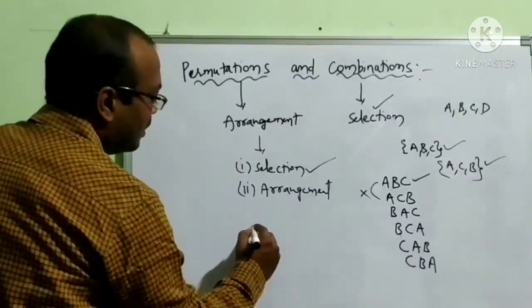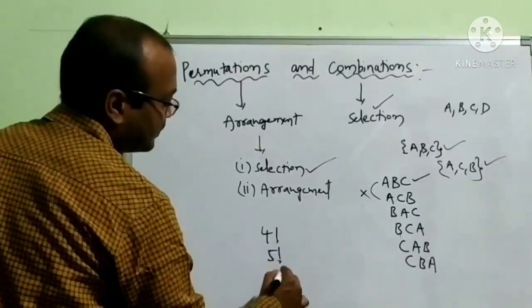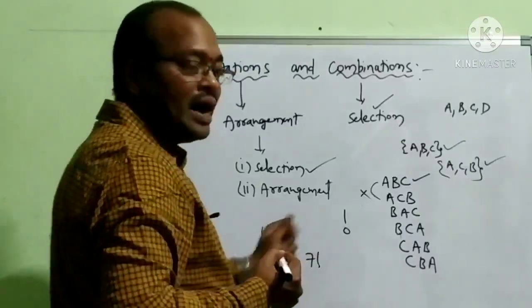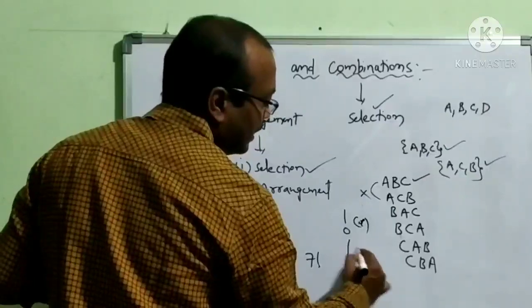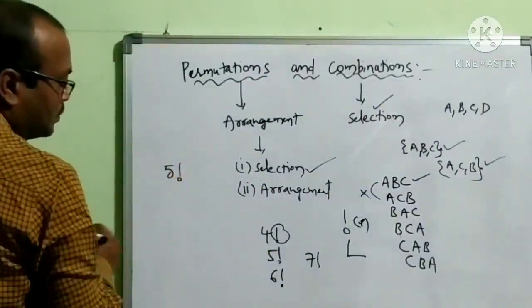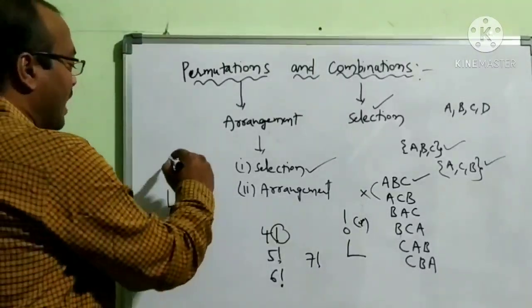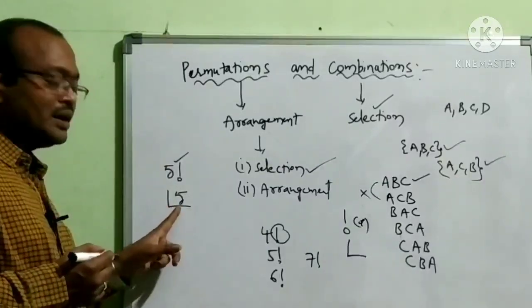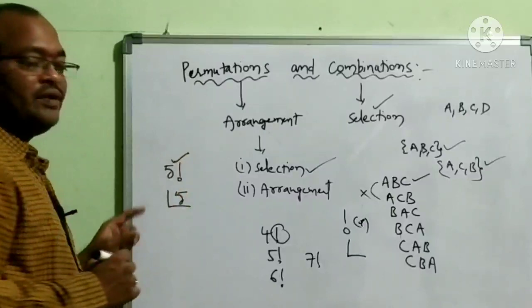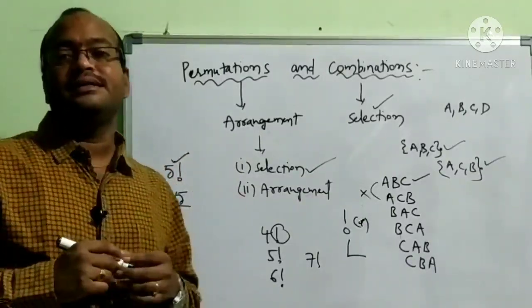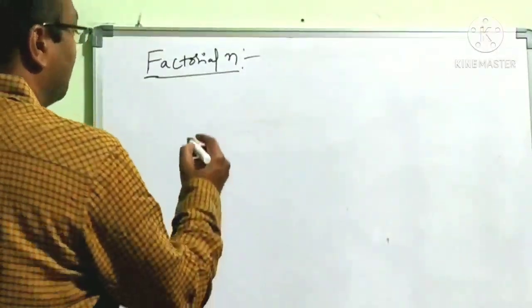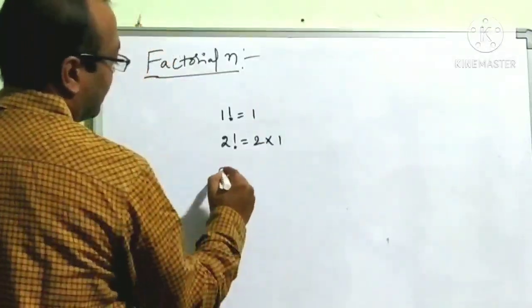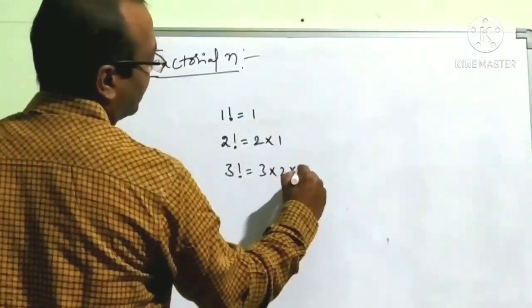What is happening with 4!, 5!, 6!, 7!? These are factorials. Factorial, factorial, factorial — this symbol denotes factorial.